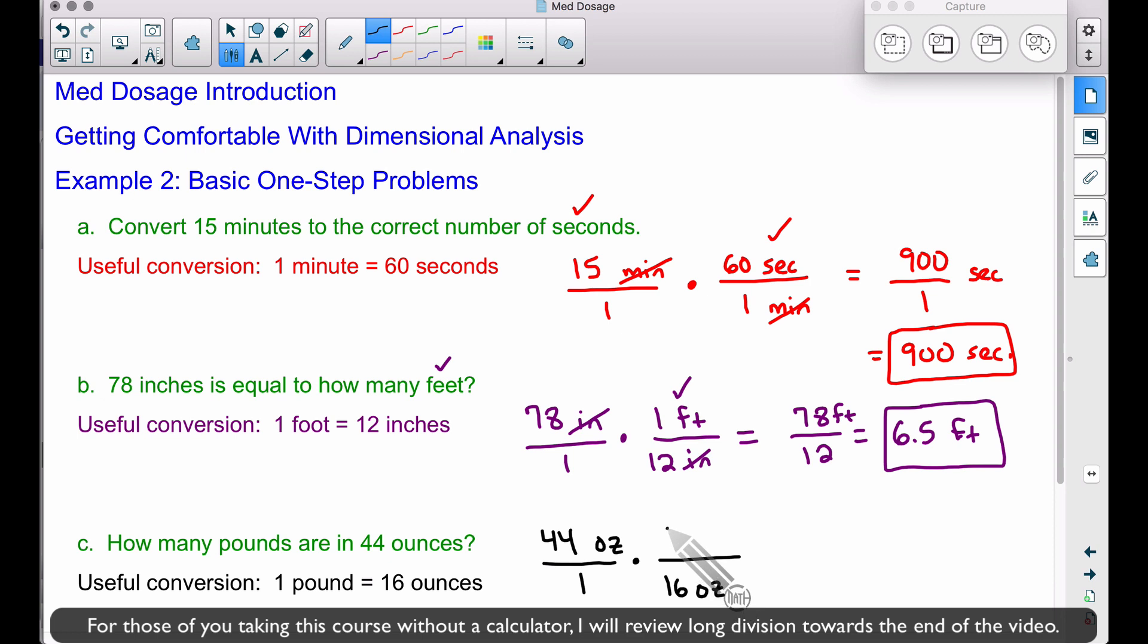You can abbreviate pound as lb. I don't think there's anything wrong with using lb, and lbs is plural for pounds. Don't ask why, it is what it is. Now we can cancel the word ounces, and the only word we have left is pound. Perfect. How many pounds?